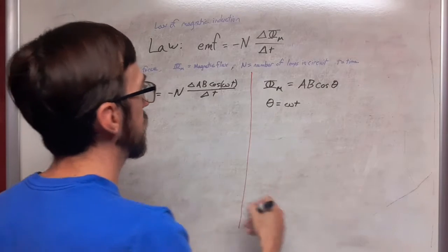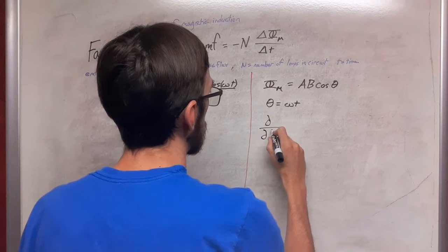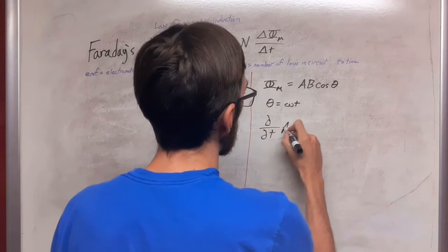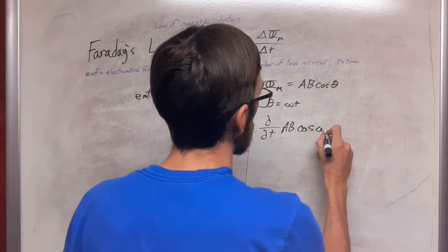So over to the side, I'm going to write this as a partial. We're going to look at the derivative with respect to t of AB cos omega t.